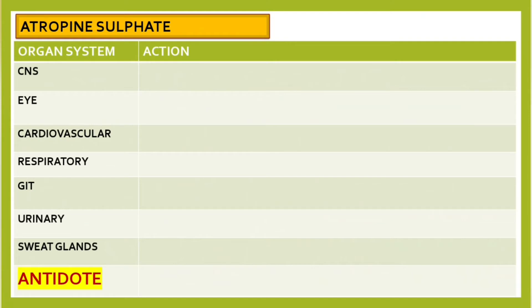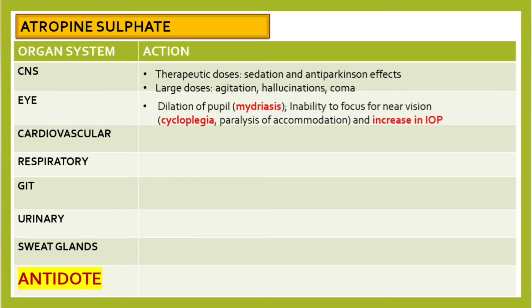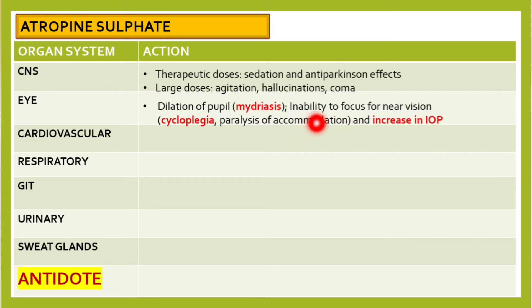Atropine's actions vary by organ. In the central nervous system, therapeutic doses cause sedation and anti-Parkinsonian effects, while large doses cause agitation, hallucinations, or even coma. In the eye, atropine causes dilation of the pupil called mydriasis, inability to focus for near vision (cycloplegia — paralysis of accommodation), and increased intraocular pressure.